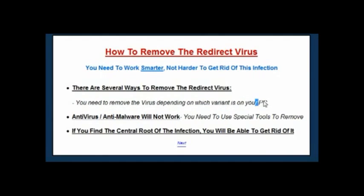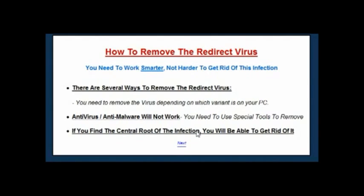The way to actually get rid of it is to work through the processes that will remove the variation you have on your system. You can either work out which variant you have and use the correct removal method, or go through the entire catalogue of processes to remove the virus, hoping that one of them gets the infection off your PC. I recommend the latter approach because that way you can ensure your system is clean of all types of redirect virus. The bottom line is you've got to find the central root of the virus — either a setting or some obscure file that no antivirus will find — and then get rid of it. That's exactly what I want to show you on this website.